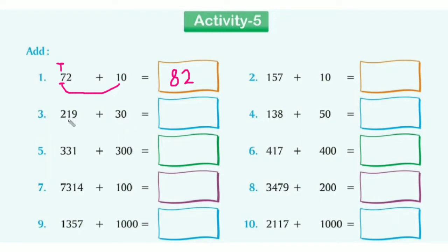See here: 219 plus 30. We need to identify the tens — 1 is in the tens place. The other digits stay the same: 2 remains as it is. Now 1 plus 3 tens equals 4 tens, and 9 stays as it is. So 249 is the sum. Now the fourth example you need to solve yourself. I will solve the fifth one.